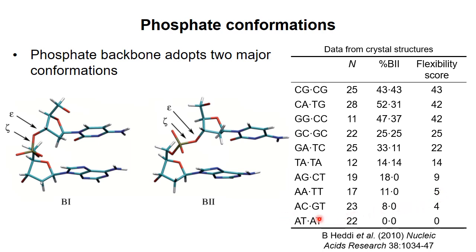In the extreme case, for the A-T-A-T dinucleotide, the B2 conformation was never observed, implying that the A-T-A-T dinucleotide is not very flexible at all, at least measured in this way. So this is a way to rank the flexibility of the different possible dinucleotide combinations.